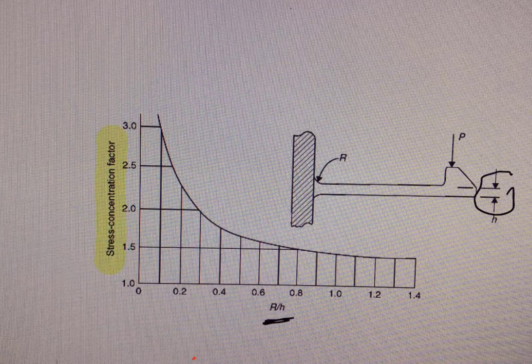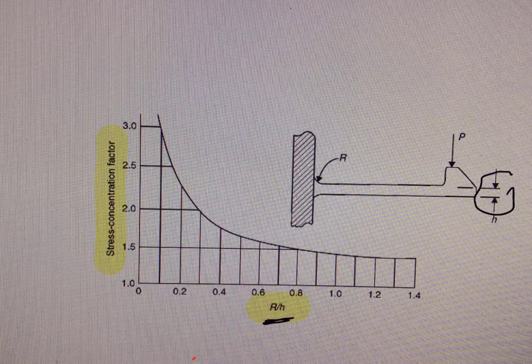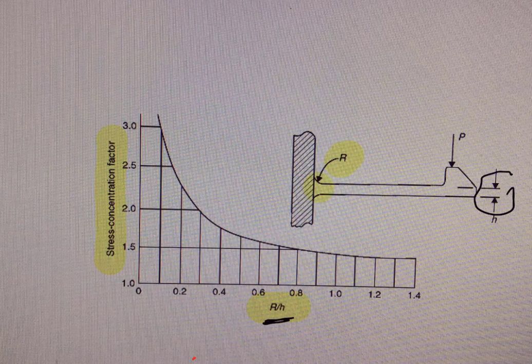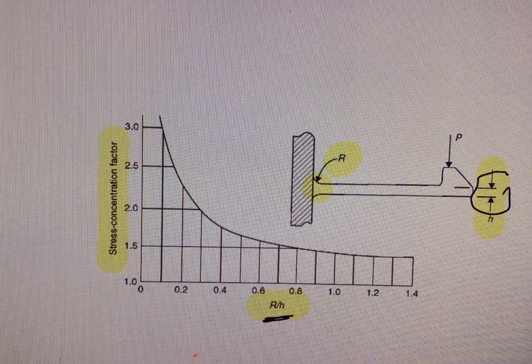In this case what we have is the stress concentration factor on the y-axis plotted against capital R over H where capital R is the fillet radius for a built-in cantilever beam and H is the cantilever beam thickness. So I can use a chart like this to give me a stress concentration factor.